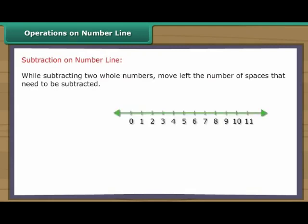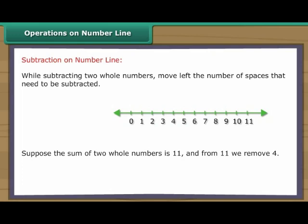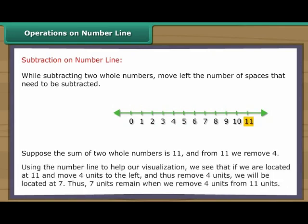While subtracting two whole numbers, move left the number of spaces that need to be subtracted. Suppose the sum of two whole numbers is 11 and from 11 we remove four. Using the number line, we see that if we are located at 11 and move four units to the left, we will be located at seven. Thus, seven units remain when we remove four units from 11 units.